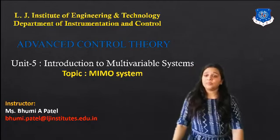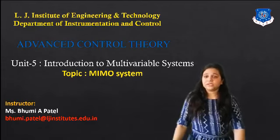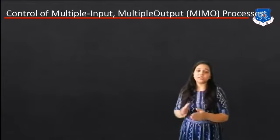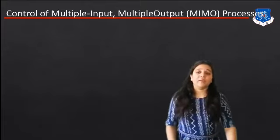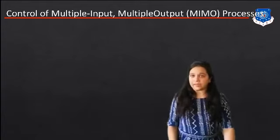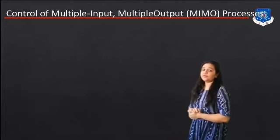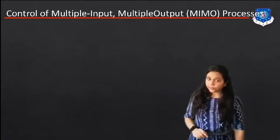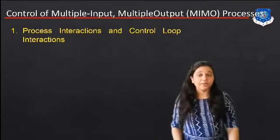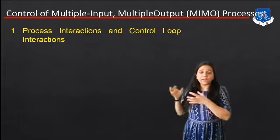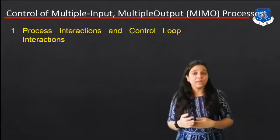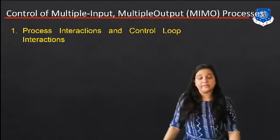So first of all, what is the MIMO System? As we study in control systems, there is only a single input and single output closed-loop system — whatever input is given to the controller, we get a particular output, and if the output is not proper, we connect the feedback element. Our first topic in Chapter 5 is Control of Multiple Input, Multiple Output Processes — the Process Interaction and the Control-Loop Interaction — because here we can apply multiple inputs to a system and get multiple outputs. Interaction is the main thing for the process, and control-loop interaction is also important.